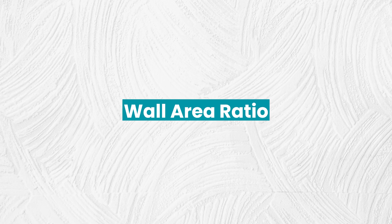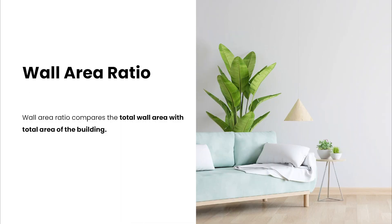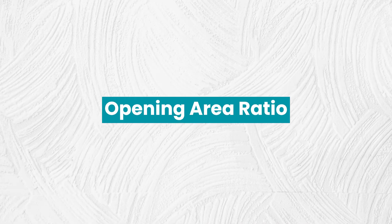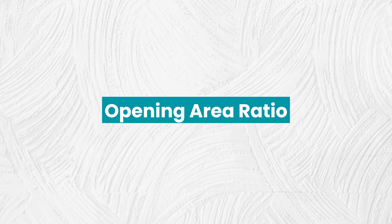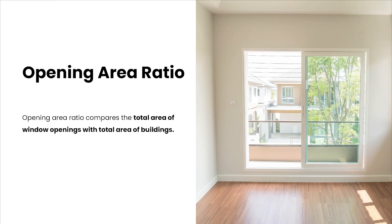Wall area ratio compares the total wall area with the total area of the building. The opening area ratio compares the total area of window openings with the total area of the building.